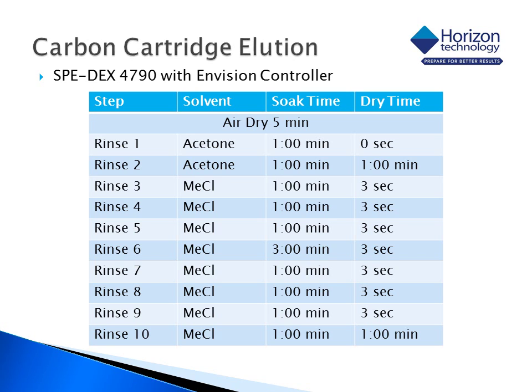A separate elution method was used to elute the carbon cartridge. There were 10 rinse steps following an initial air-dry time of five minutes to dry the carbon cartridge of any residual water. The first two rinses are acetone, which is a water-miscible solvent used to rinse the original sample bottle and remove any residual water, followed by eight rinses of methylene chloride, which elutes any organophosphate pesticides present in the original sample bottle or retained on the carbon cartridge.